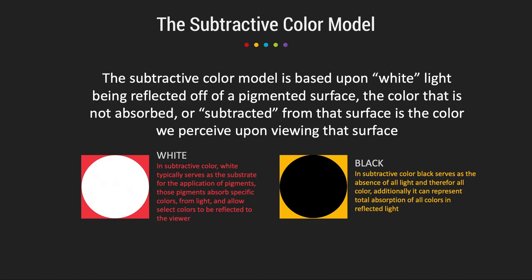Think of a white piece of paper with ink printed on it — those inks are absorbing out of white light all of the colors that we are ultimately not going to see. White in subtractive color typically serves as the substrate for the application of pigments; most offset press printing is done on white paper stock. In subtractive color, black serves as the absence of all light and therefore all color — it represents total absorption of all colors in reflected light. A white piece of paper with black ink has that ink absorbing all colors in the spectrum and not reflecting any colors back to you.